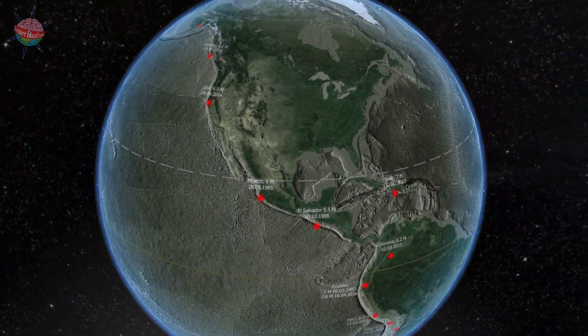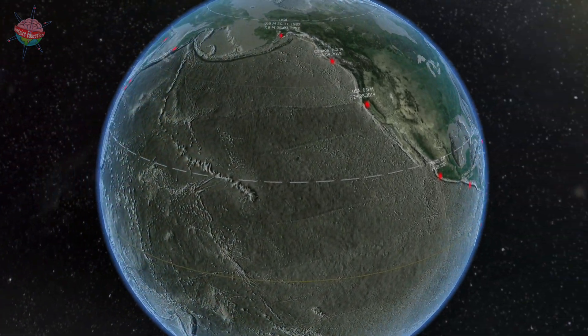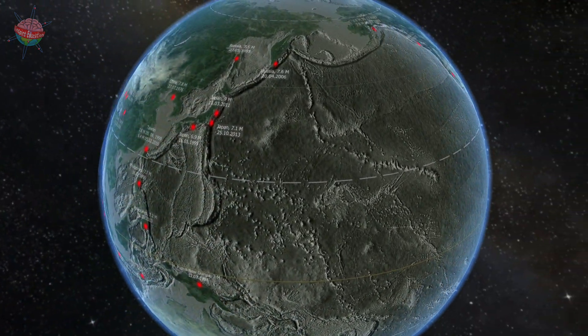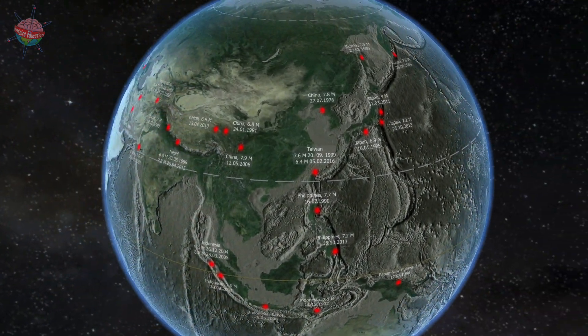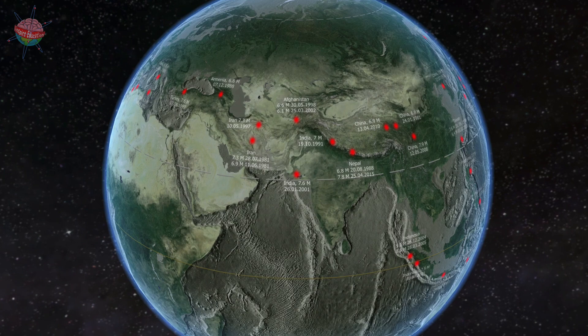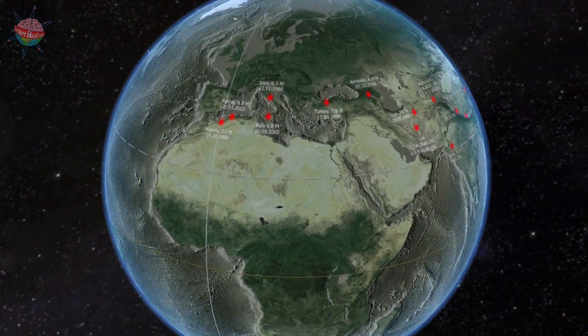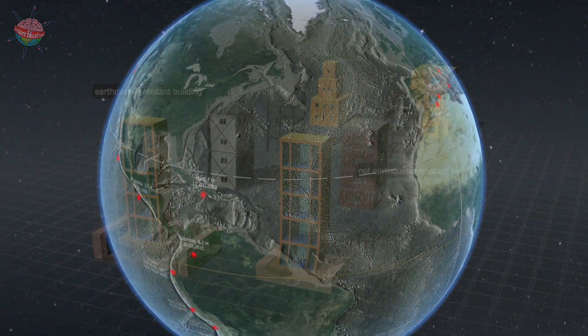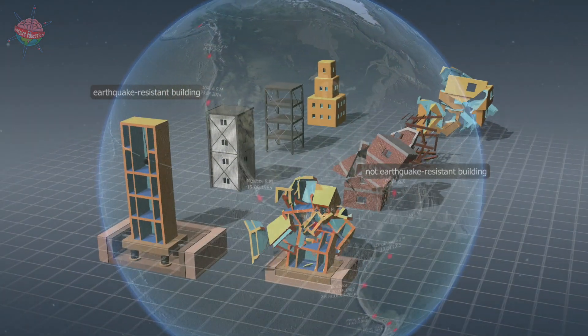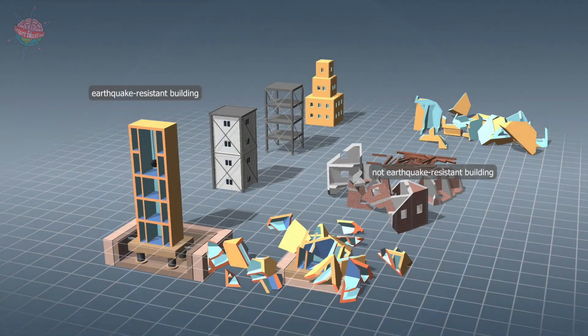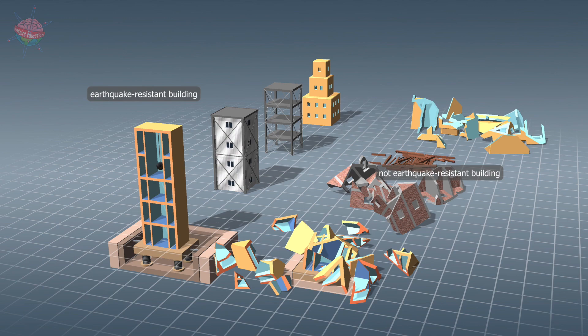Although today we have a thorough knowledge of seismic regions and the nature of earthquakes, it is still impossible to predict the exact time an earthquake will occur, or its intensity at a specific location. Therefore, the best way to protect against earthquakes in seismic areas is to build earthquake-resistant buildings.